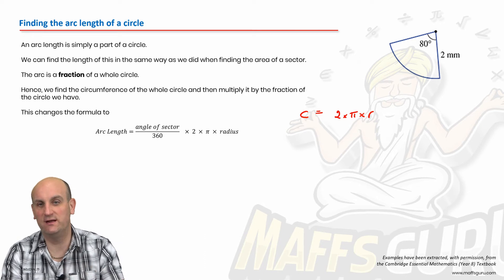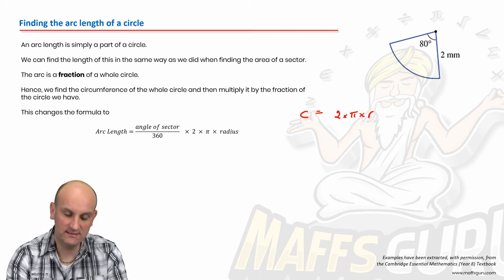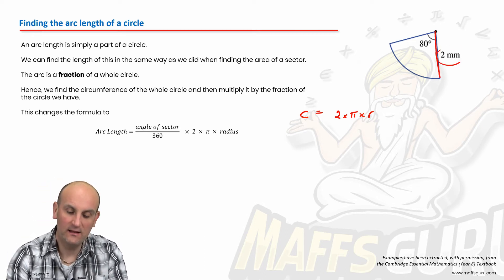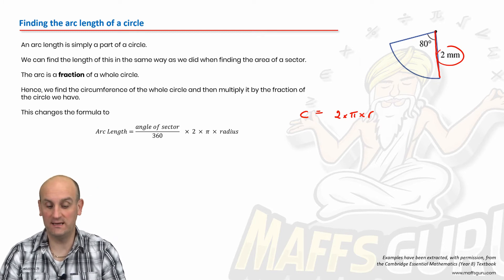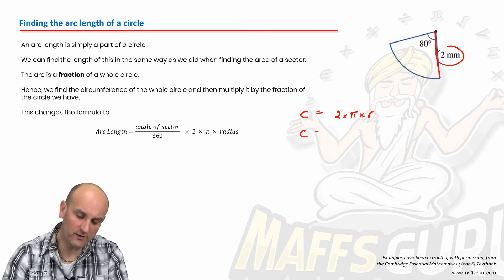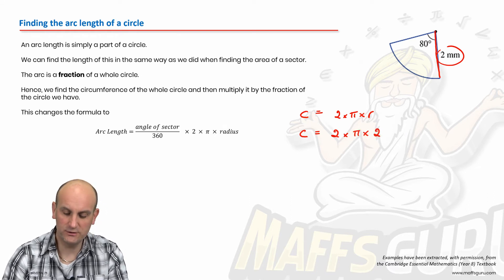So the circumference of the whole circle is given by 2 times pi times radius. Now, it's not always easy to see which one the radius is, but I'm telling you for sectors, whenever they have this line here, that there is always my radius.